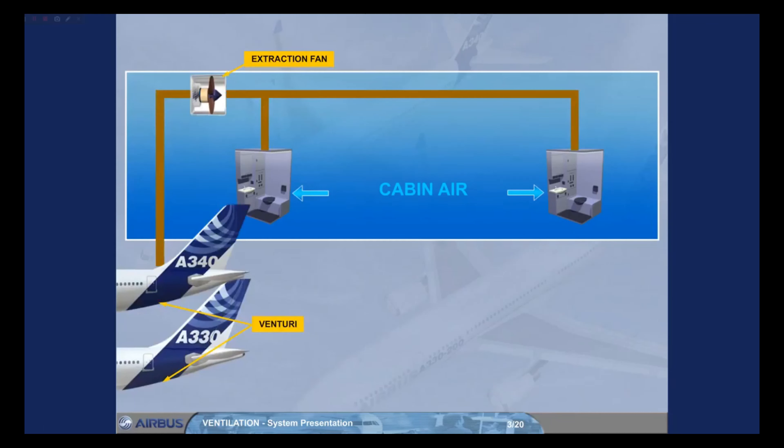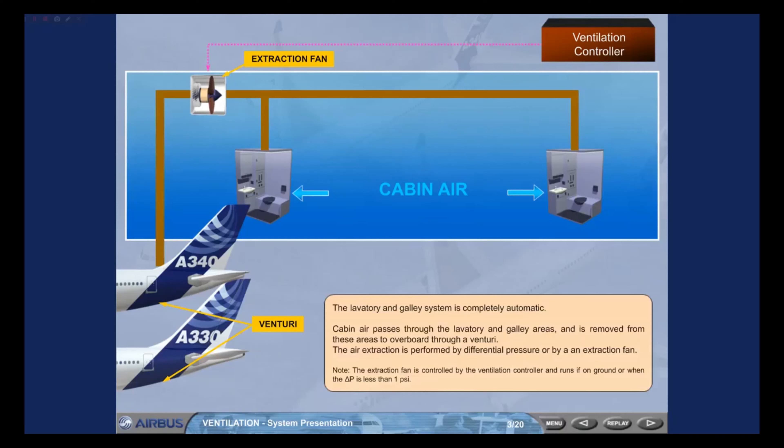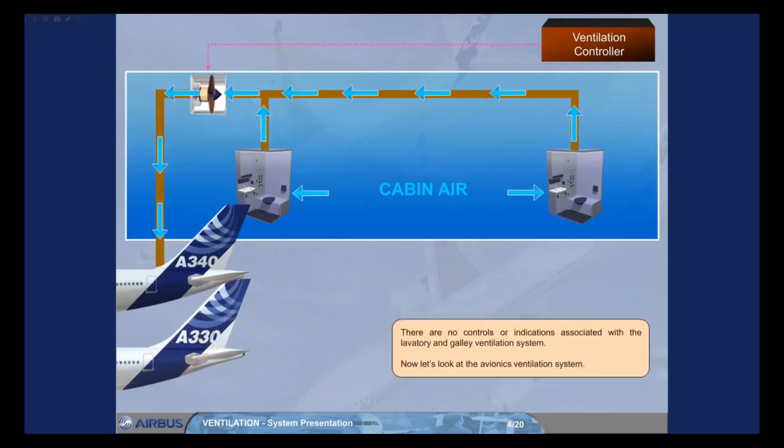The extraction fan is controlled by the ventilation controller and runs on ground or when the delta P is less than 1 psi. There are no controls or indications associated with the lavatory and galley ventilation system.